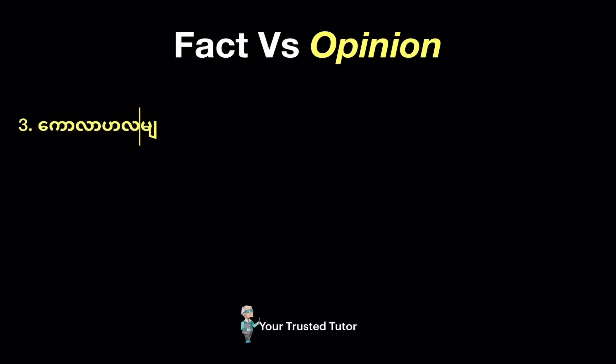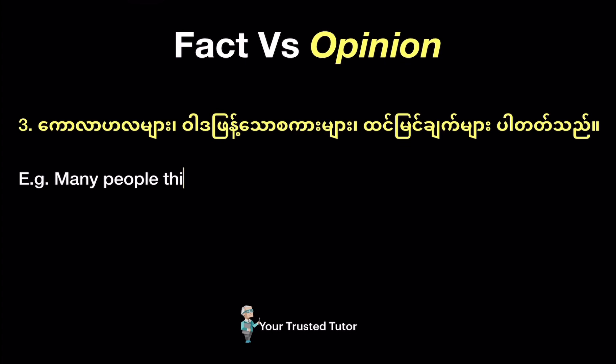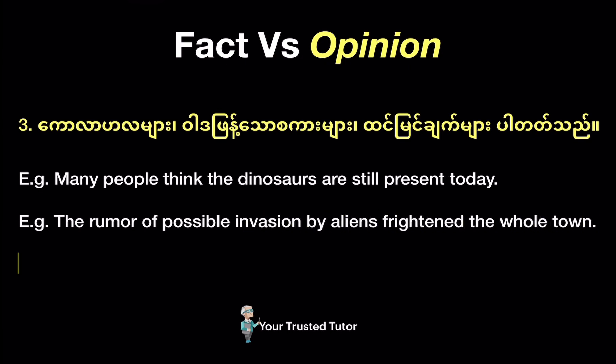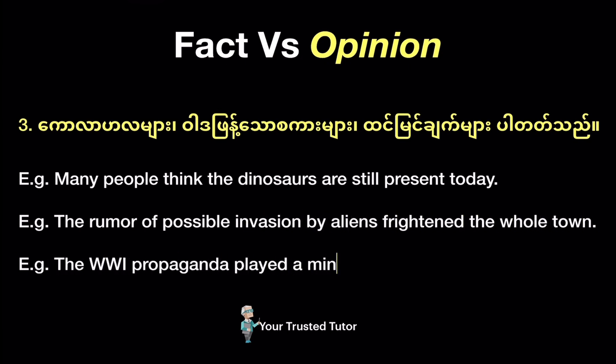Tip number three: an opinion usually includes rumors, scandals, propaganda, and general opinion from the public. Let's see the examples: 'Many people think the dinosaurs are still present today.' 'The rumor of possible invasion by aliens frightened the whole town.' 'The WWI propaganda played a minor role to defeat the enemies.' From these examples, you can understand that opinions are unsupported by observation, scientific ideas, and evidence.